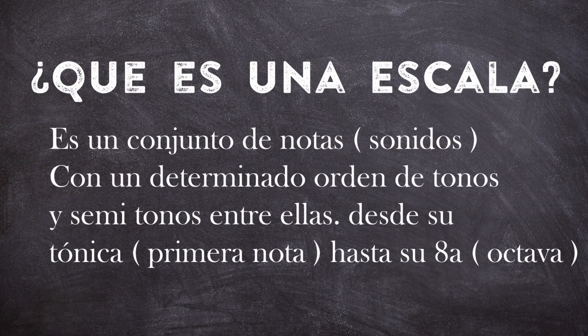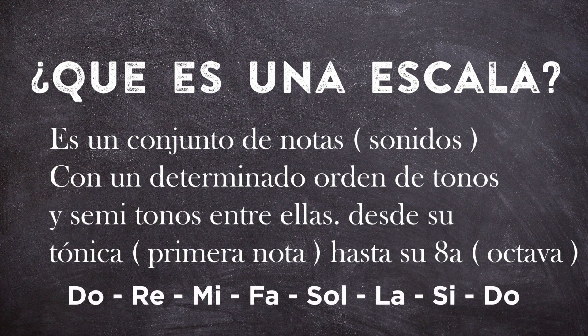Antes de tocar la guitarra vamos a ver qué es una escala. Una escala es un conjunto de notas y sonidos con un determinado orden de tonos y semitonos entre ellas, desde su tónica, que sería la primera nota, hasta su octava. Si tenemos la escala de do mayor, tendríamos: do como primera, re segunda, mi tercera, fa cuarta, sol quinta, la sexta, si séptima, y la última nota que es la repetición, su octava, que sería do.